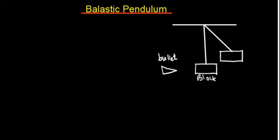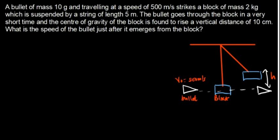In this tutorial we are also going to talk about the ballistic pendulum. Under the ballistic pendulum, there are two scenarios: it can undergo either elastic or inelastic collision. The bullet goes through the block in a very short time, and the center of gravity of the block is found to rise a vertical distance.